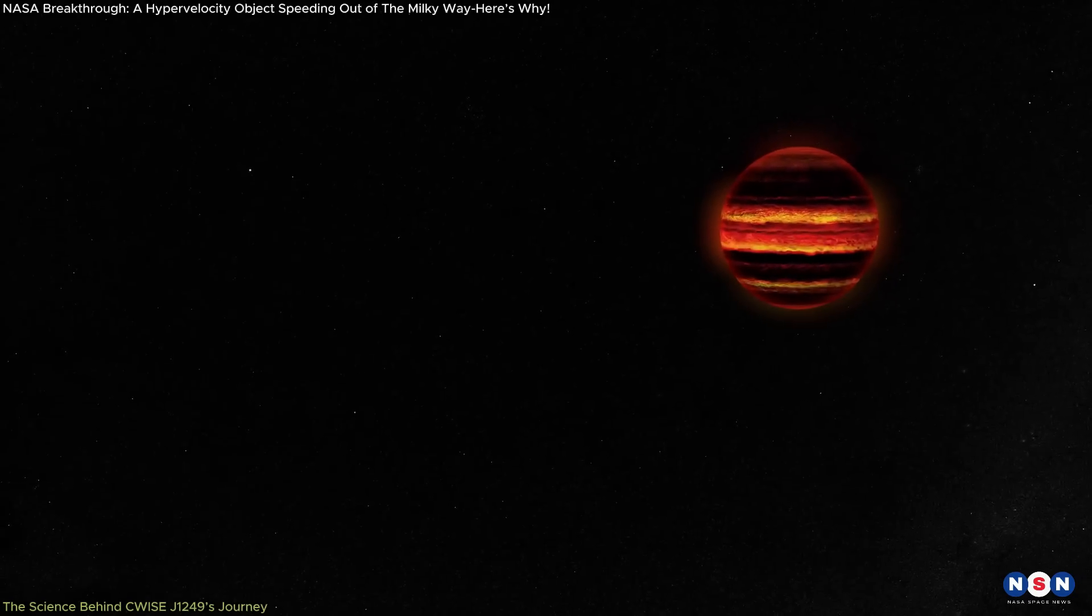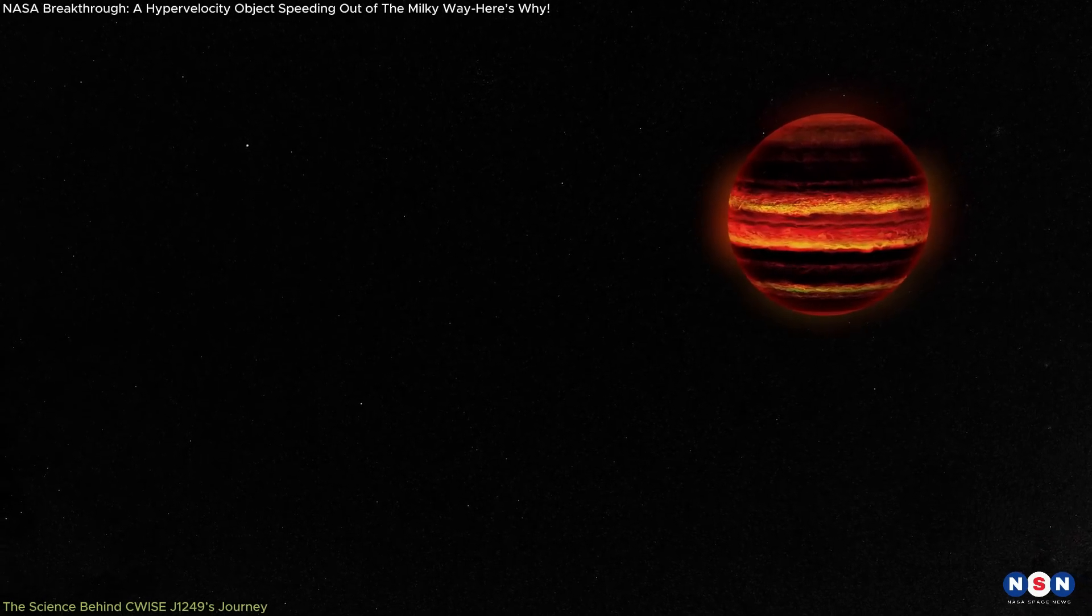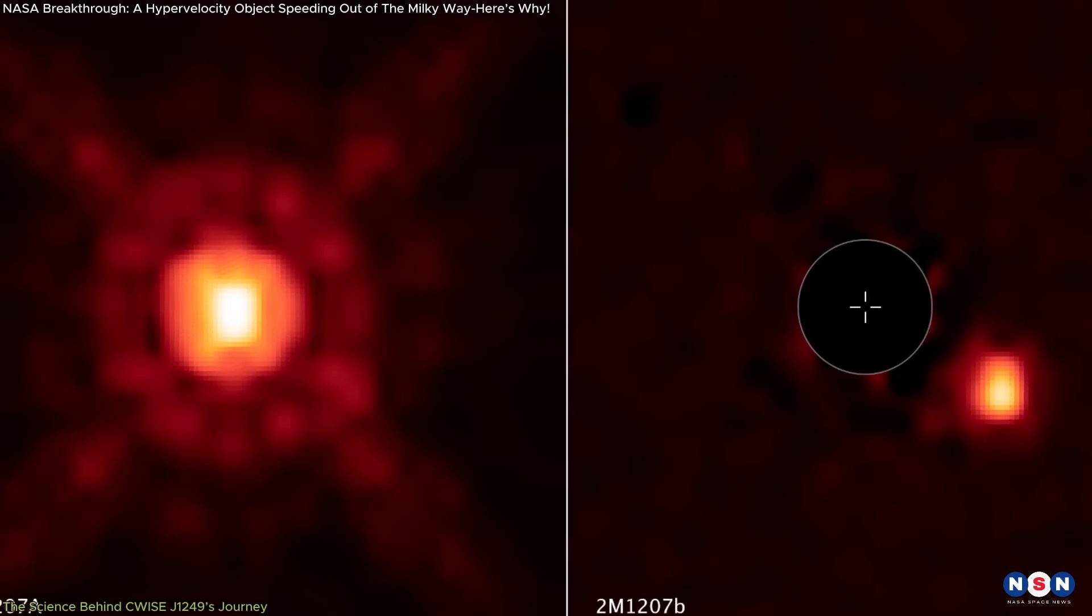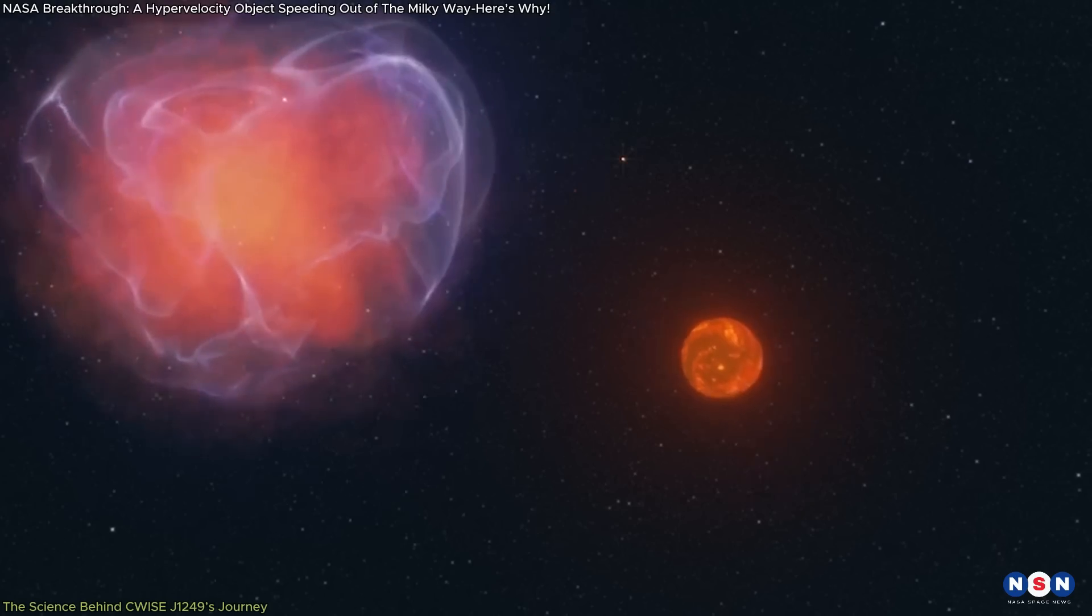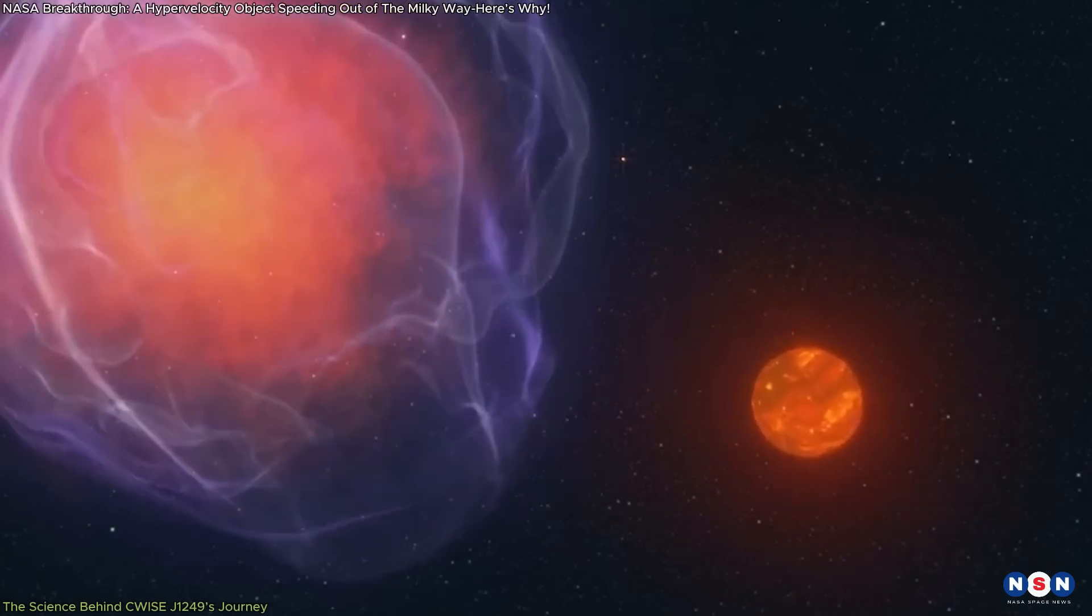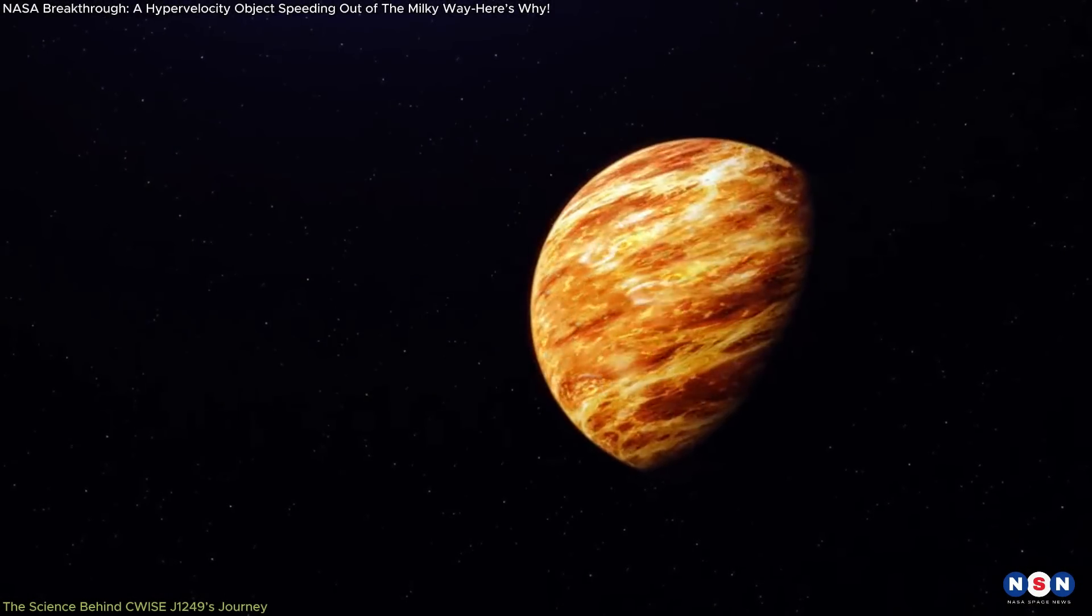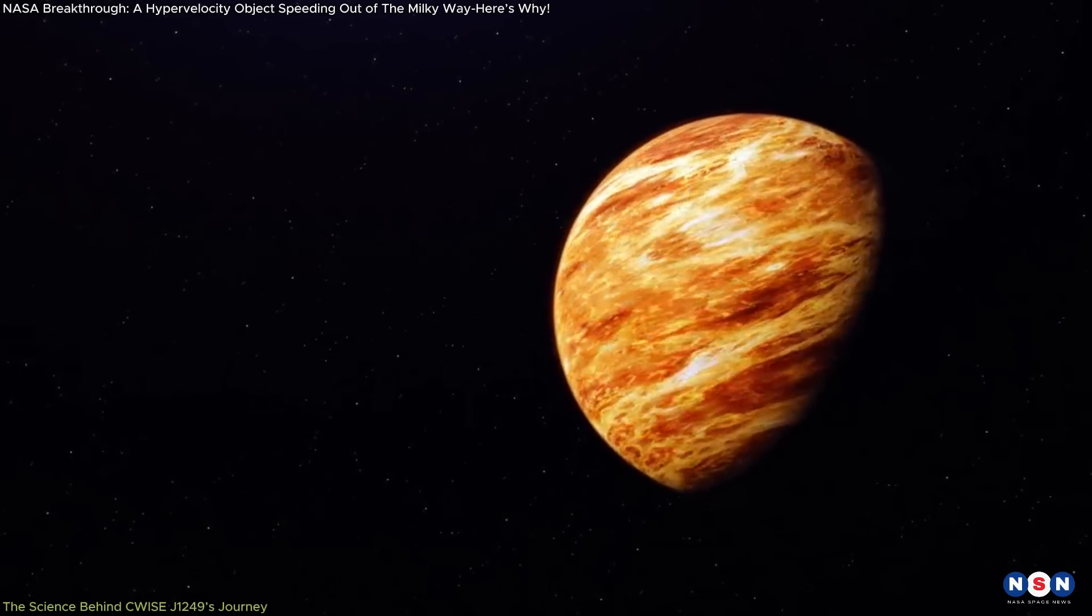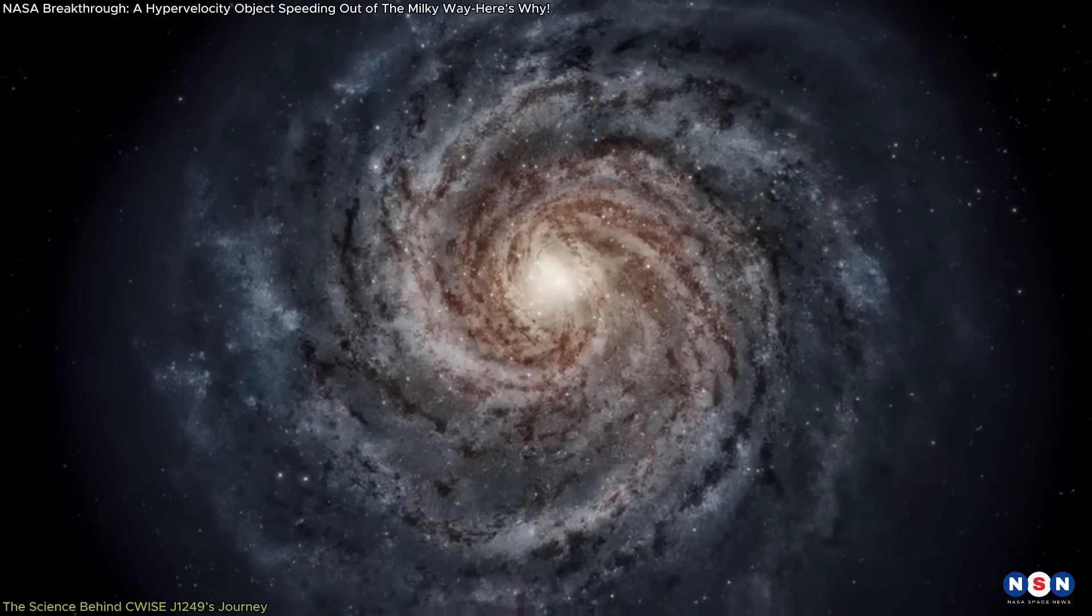This object offers a unique chance to study the chemical and physical properties of low-mass stars and brown dwarfs, which are usually too faint and cool to observe in detail unless they are nearby. However, with this velocity object speeding through the galaxy, scientists can gather valuable data that would otherwise be out of reach. This opens new doors for research into the formation and evolution of brown dwarfs and other low-mass stars, especially those from distant, ancient parts of the Milky Way.